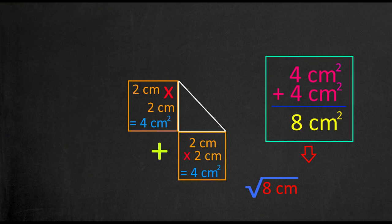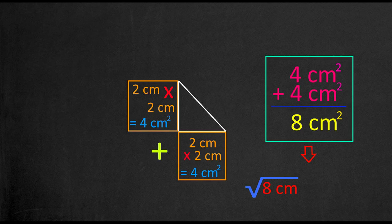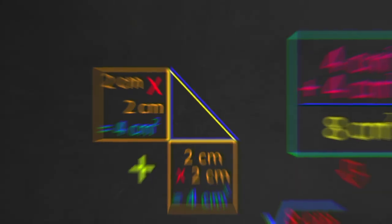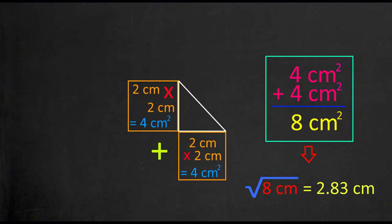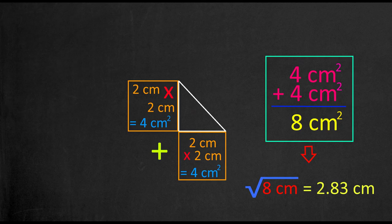We use the 8 cm squared total and take the square root of it to get our final answer. So, when we take the square root of 8, we get our hypotenuse's length of about 2.83 cm. This theorem is quite simple once you get the hang of it.